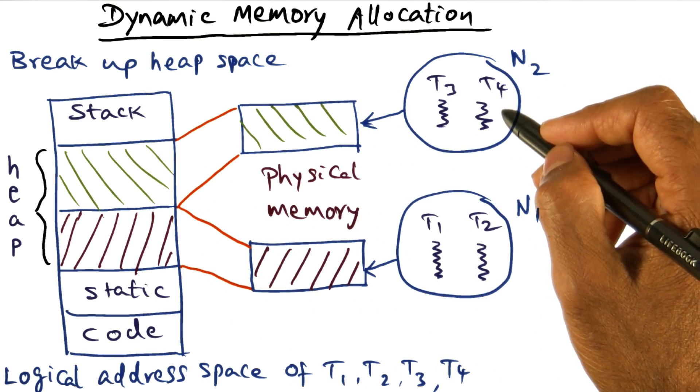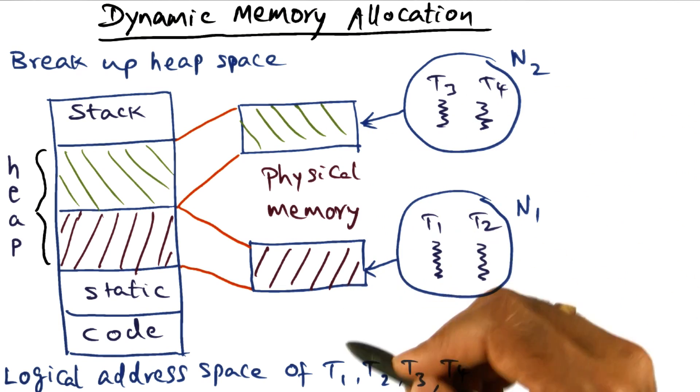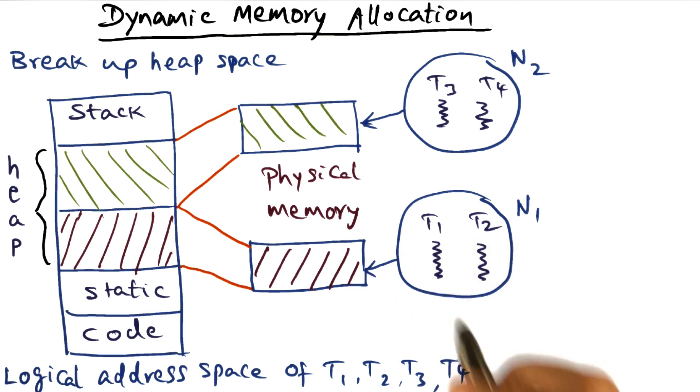So dynamic memory allocation requests from these threads are satisfied from here, from these threads satisfied from here. That allows for scalable implementation of dynamic memory allocation.